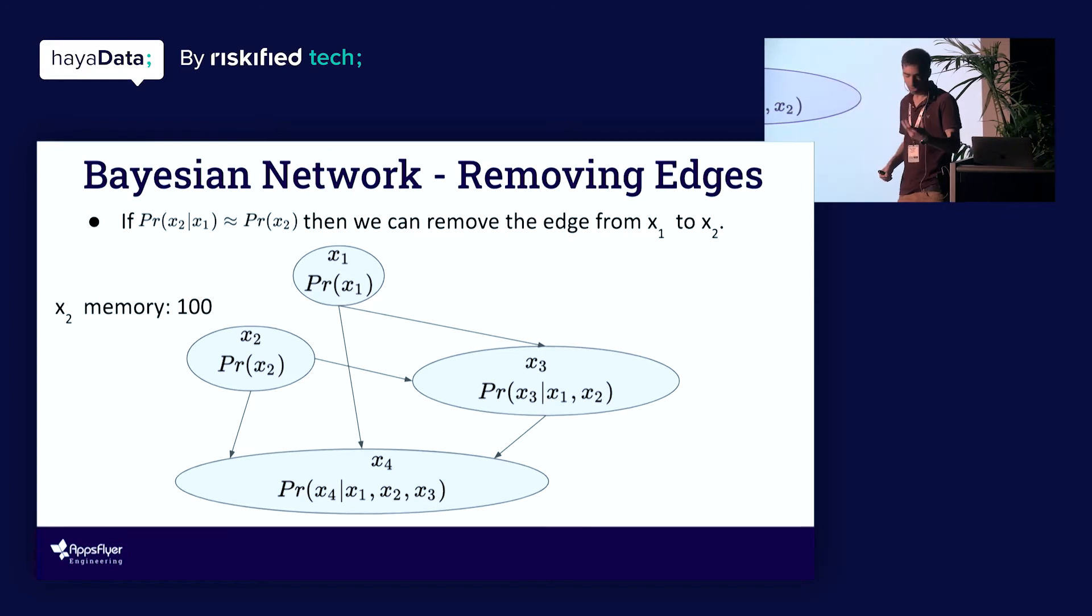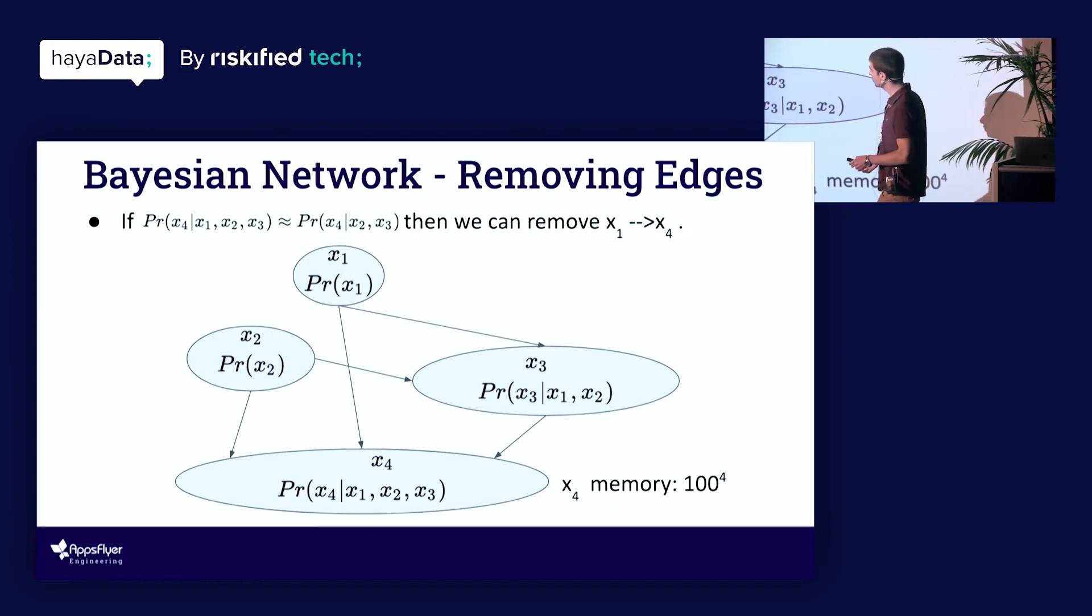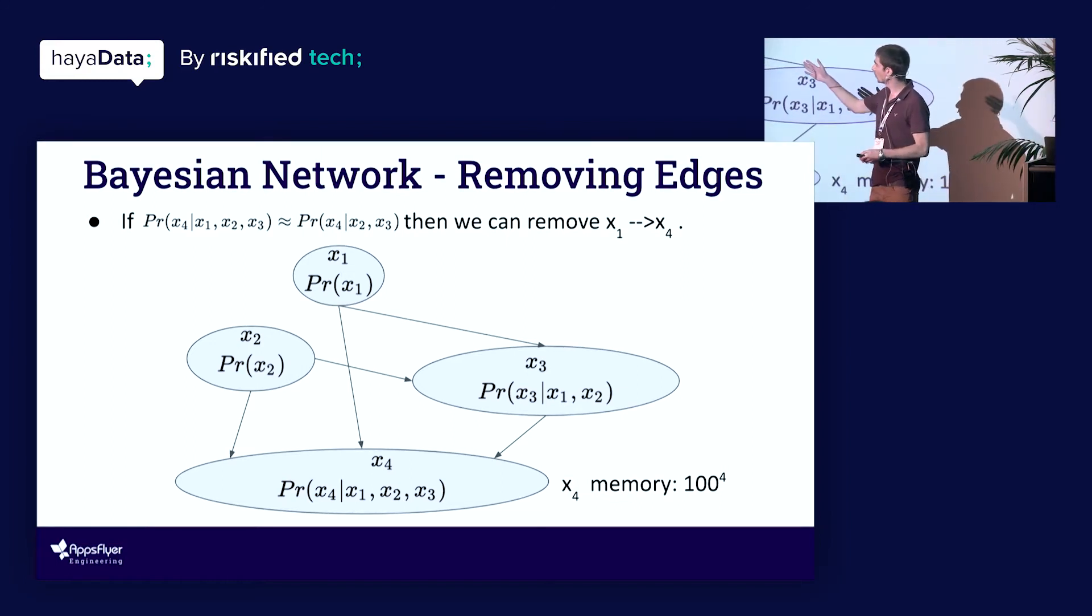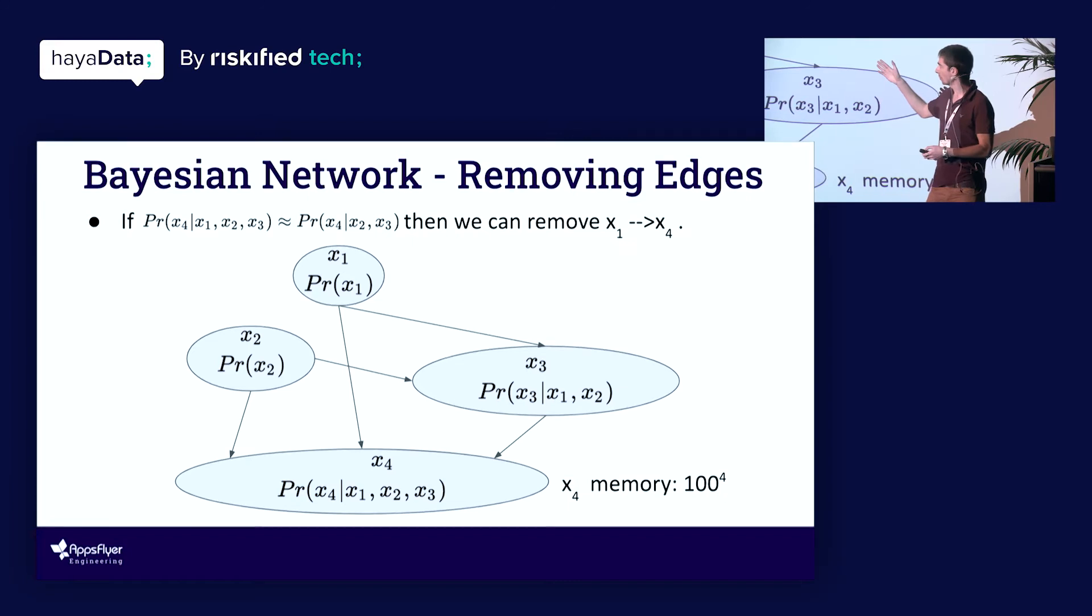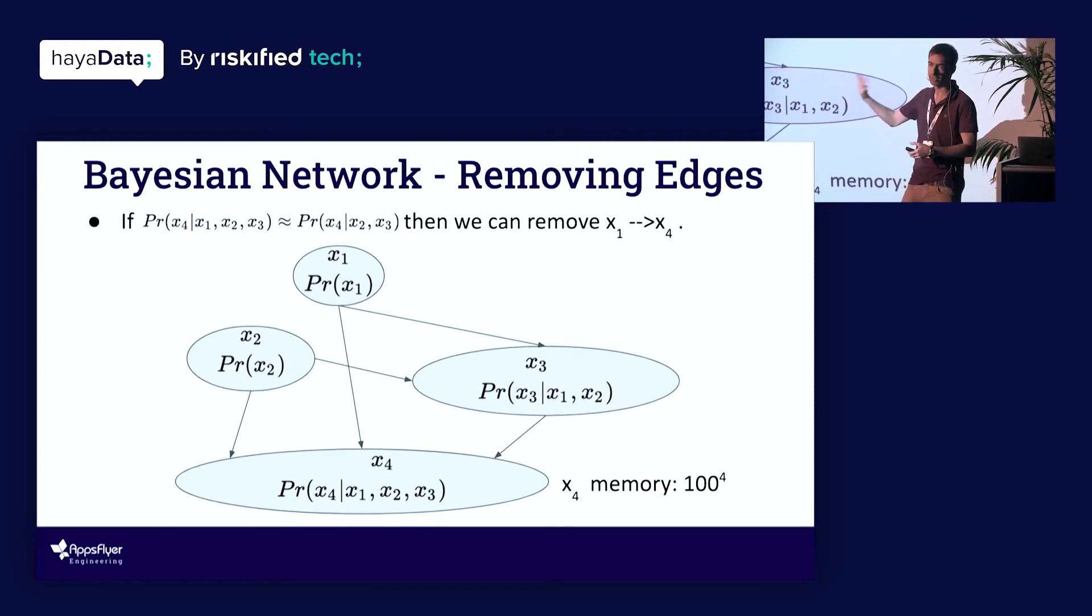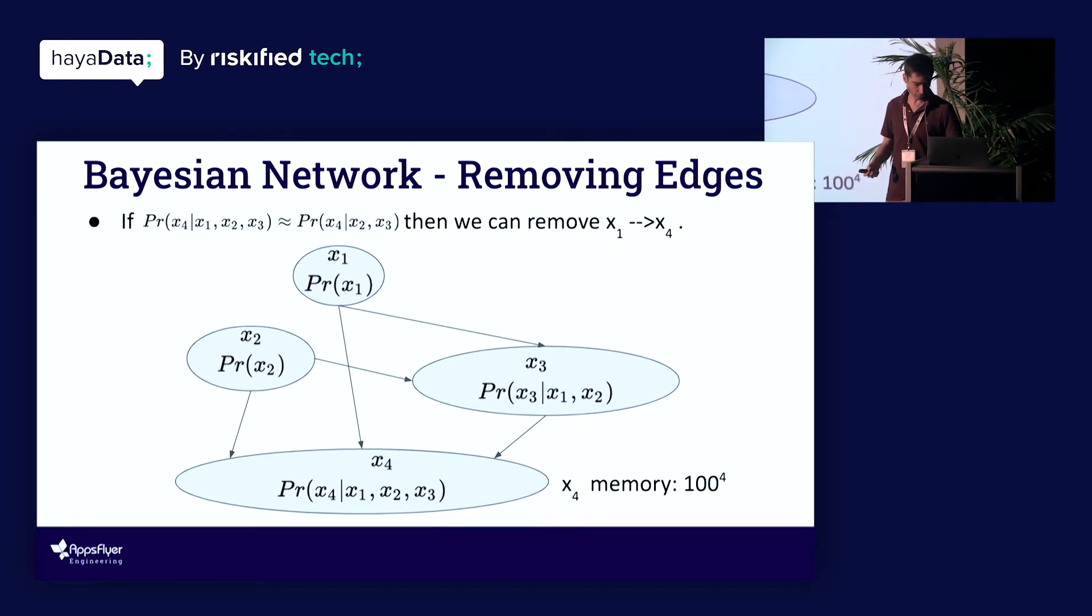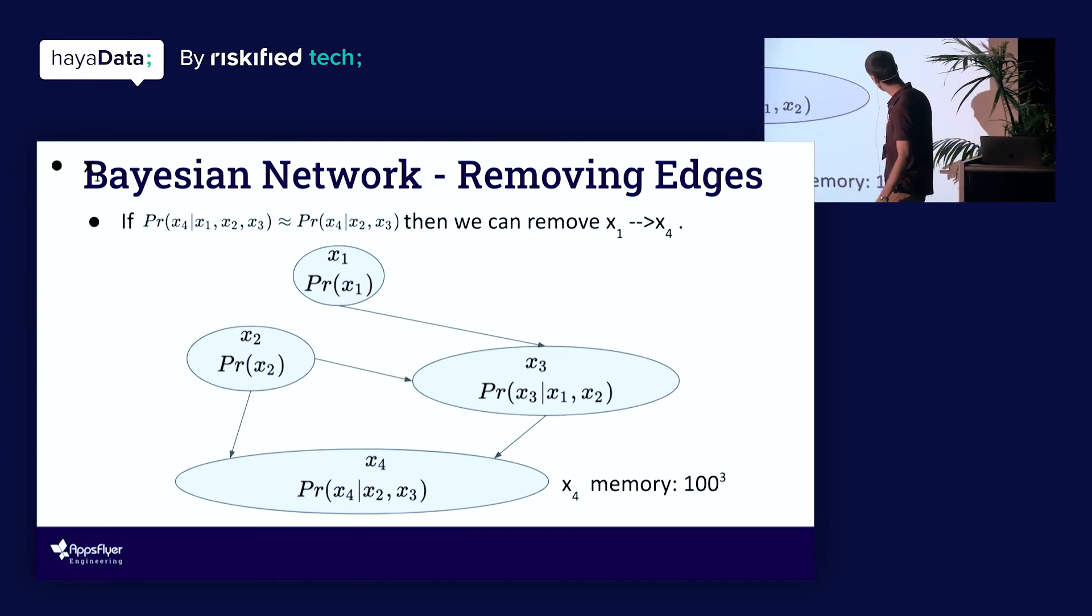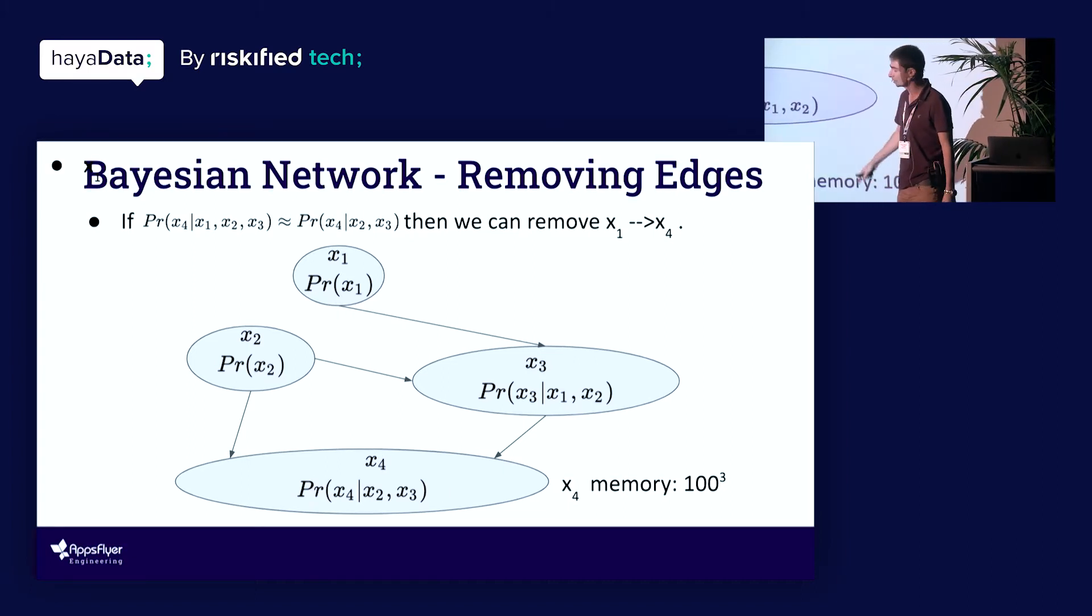And now our network just became a little simpler. We're going to continue doing this again. And in this case, assume that probability for seeing x4 given x1, x2, and x3 is roughly the same as probability for seeing x4 given x2 and x3. Or in other words, given x2 and x3, x1 doesn't add any information about x4. Or given x2 and x3, x1 and x4 are independent. In this case, we'll remove the edge from x1 to x4. And the memory of x4 will thus be reduced from a hundred to the four to a hundred cube.